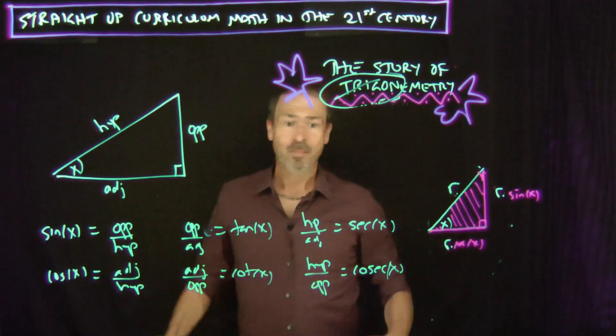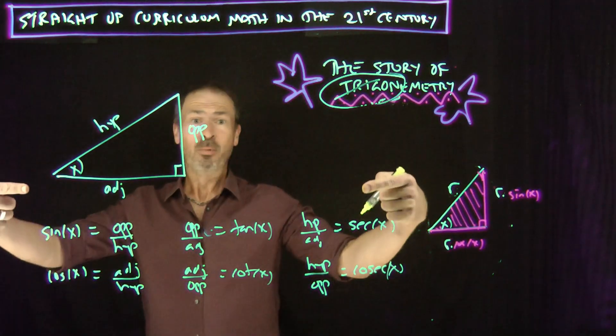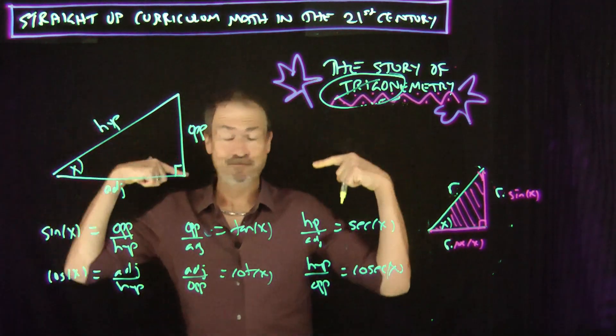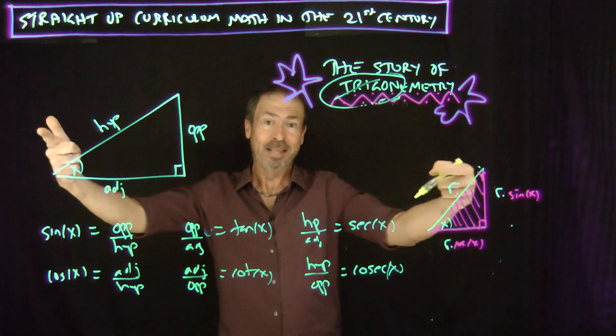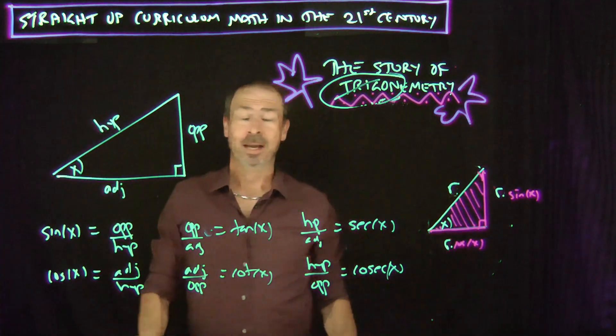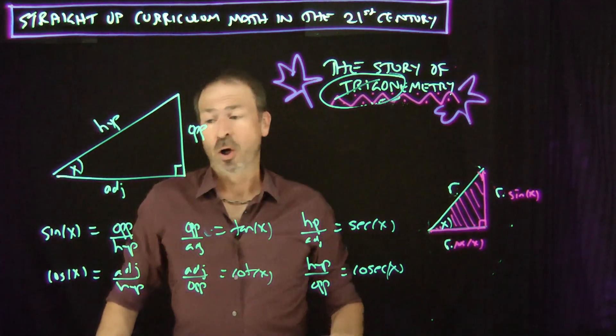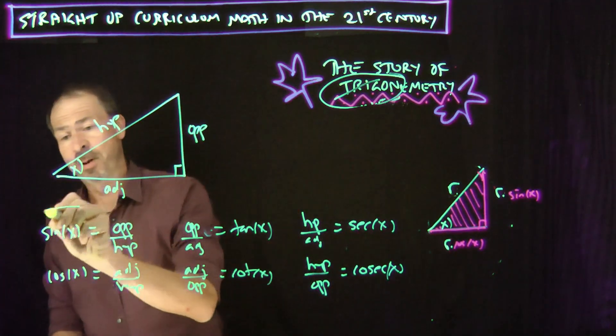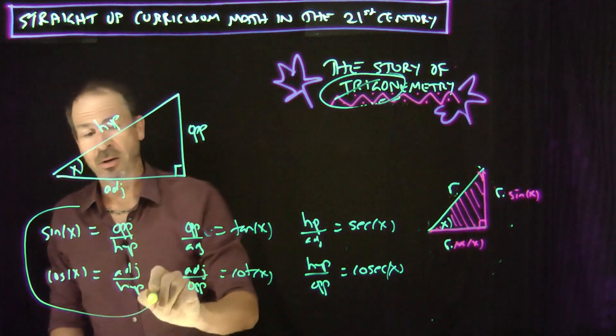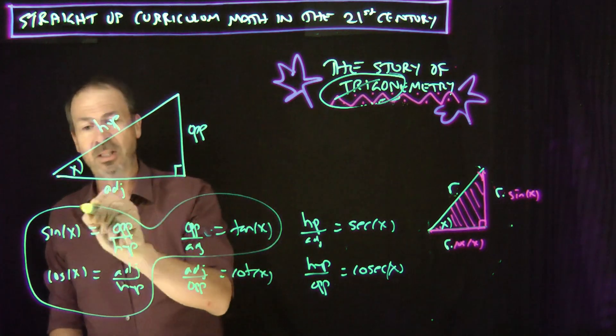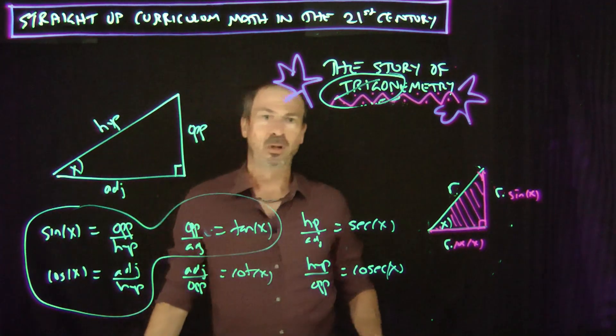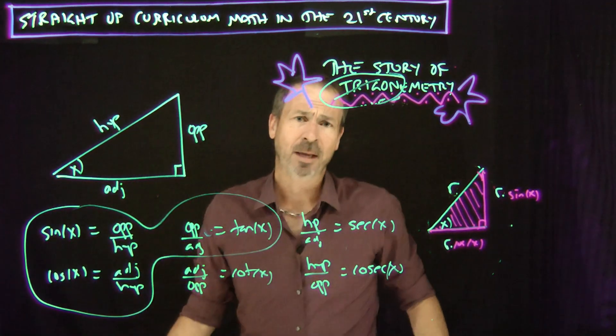Weird names! But he said, just have names for everything — why not? Your curriculum probably focuses on three of them: sine, cosine, and tangent.